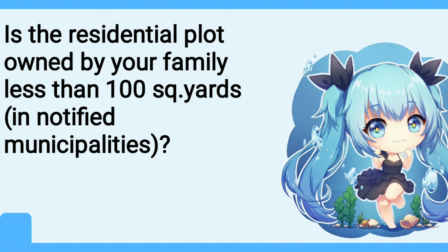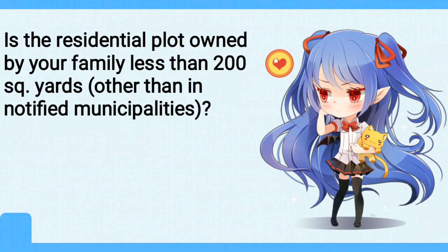Criteria 5: The residential plot owned by a family should be less than 100 square yards in notified municipalities. Note that 100 square yards is equal to 900 square feet or approximately 2 cents. Criteria 6: The residential plot owned by a family should be less than 200 square yards in areas other than notified municipalities. To be classified under EWS, your family should not own or possess a residential plot of 200 square yards or more in areas other than notified municipalities.